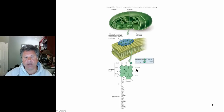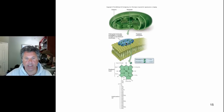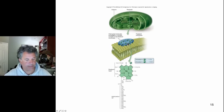We left off talking about the structure of the pigments that are responsible for absorbing the photons of light, the energy in the photons of light, and conveying those to a reaction center in a photosystem that will then elevate electrons, which will be passed on through an electron transport chain to generate a gradient of hydrogen ions. So let's go through that now.